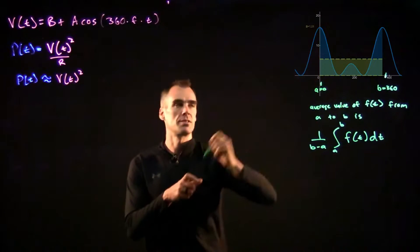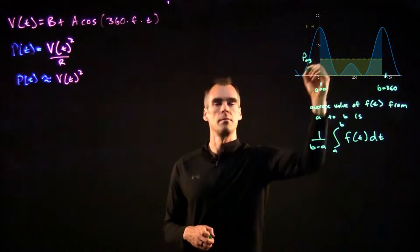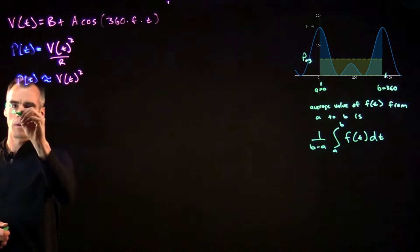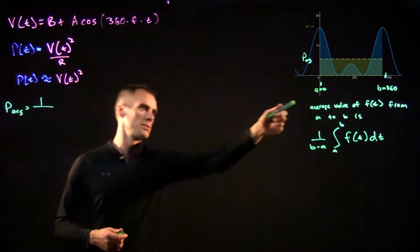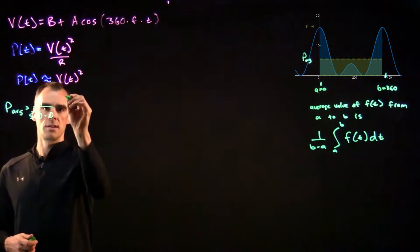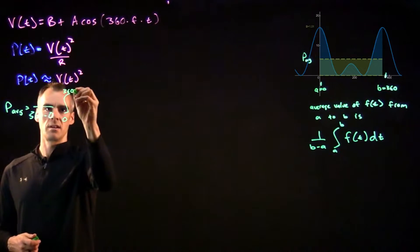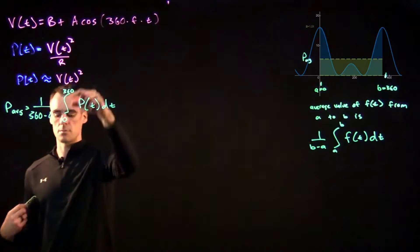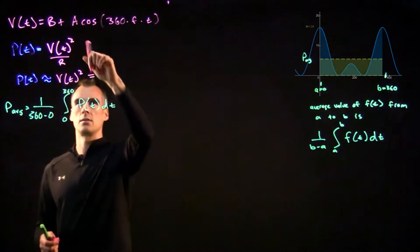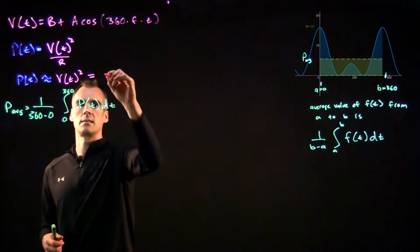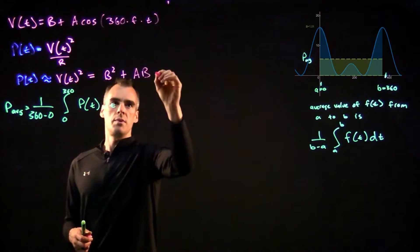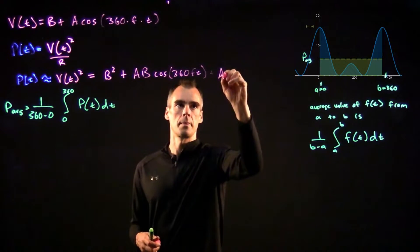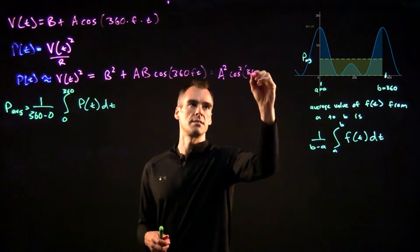Let's find this average value. P_average equals 1 over (360 minus 0) times the integral from 0 to 360 of P(t) dt. Now P(t) is the voltage squared, so let's write that out. When we square (B + A·cos(360·F·t)) it gets a little messy — we get B squared plus 2AB·cosine(360·F·t) plus A squared·cos²(360·F·t).